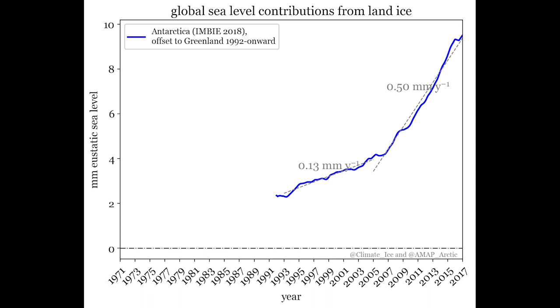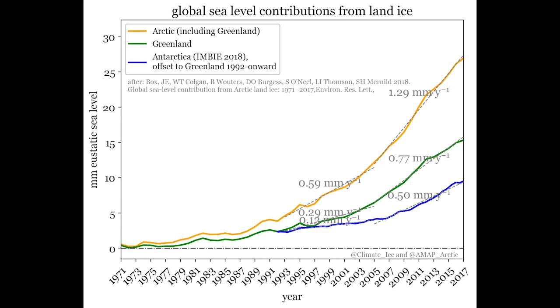The basic message is the global land ice contribution to sea level is accelerating. It hasn't amounted to a tremendous lot to present, but with doubling times under 15 years, we get sea level rise which is probably higher than what ice sheet models are delivering, because the ice sheet models still don't have all of the physical processes that produce the really rapid response of land ice to climate change.